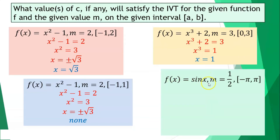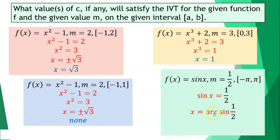Next, the function is sine x, our value for m is 1 half, and the specified interval is from negative pi until positive pi, or negative 180 until positive 180. Setting sine x equal to 1 half and solving for x, we get arc sine of 1 half. The value for x is pi over 6, which is 30 degrees. Pi over 6 is within the given interval, so this is a solution to the given function.